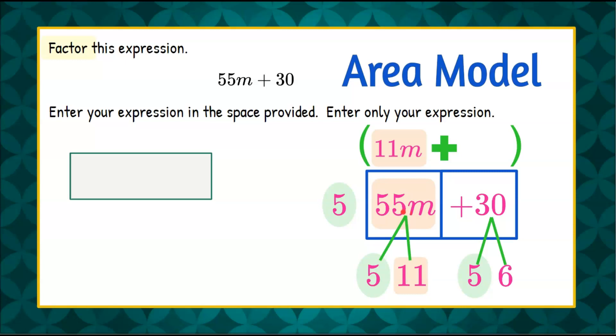You can also look at it as dividing. So if we have this and we consider this long division, 55m divided by 5 is 11m. So it works out.